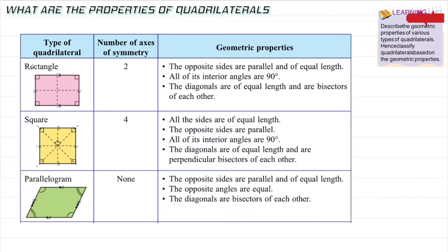The most basic quadrilateral is a rectangle — 'segi empat tepat'. The number of axes of symmetry is two: one vertical line in the center and one horizontal line. The opposite sides are parallel and of equal length. All interior angles are 90 degrees, so when you sum them all up you get 360, which is the general property of a quadrilateral.